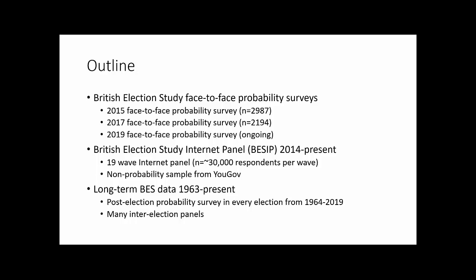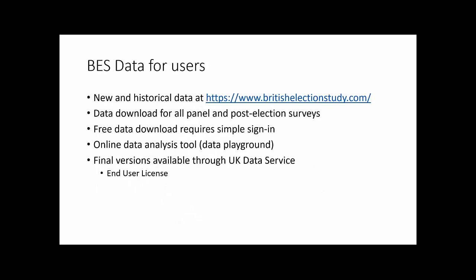I'm going to talk about the BES face-to-face surveys — this very high quality gold standard data — and also the BES internet panel, which is a much more flexible, very large 19-wave internet panel, but with the caveat that it is a non-probability survey. I'll also talk about long-term data going back to the first survey in 1963. To get the data, BritishElectionStudy.com is the place to go. All data will eventually be deposited at the UK Data Service, but the most recent data is available on our website. It's completely free to download and you can also analyze data through a data playground tool if you don't have statistical software skills.